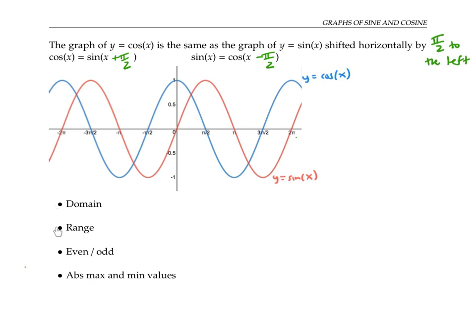Next, let's look at domain and range. The domain of sine and cosine is all real numbers, negative infinity to infinity. But the range is just from negative one to one.